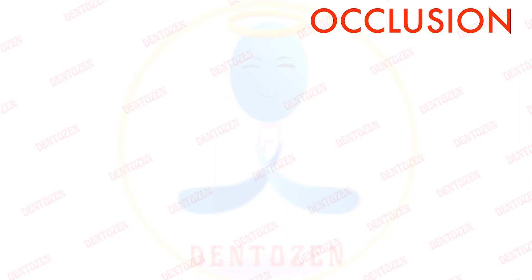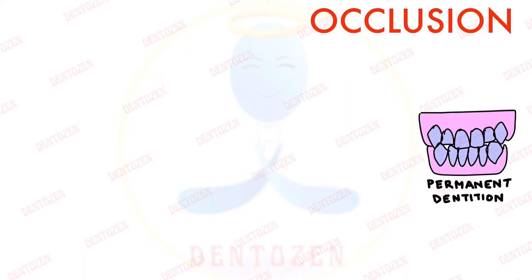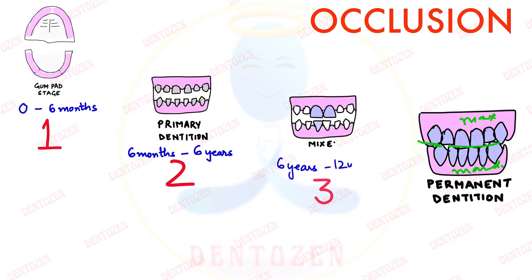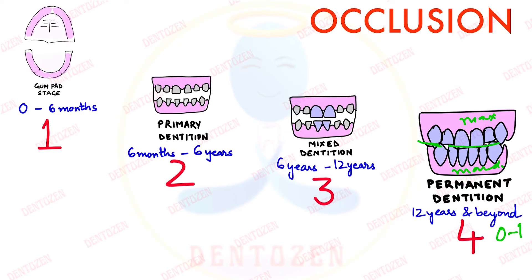Hello everyone, welcome to Gentesun. We are continuing with our lectures on occlusion. Till now we have discussed that occlusion is the contact relationship of maxillary teeth with the mandibular teeth, and it develops through various stages — that was discussed in occlusion part 1. In occlusion part 2 we discussed how changes occurring in the mixed dentition period are important for the development of proper occlusion in permanent dentition.